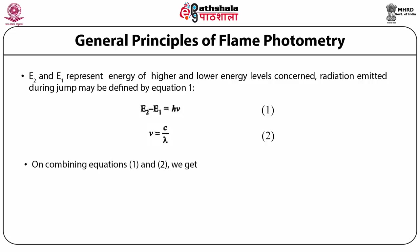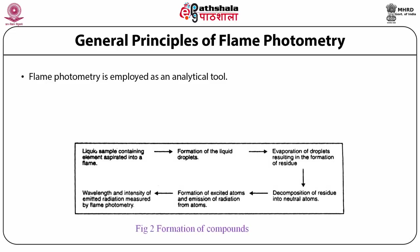Combining the two equations results in E2 minus E1 equals hc divided by lambda, and therefore lambda equals hc divided by (E2 minus E1). From this equation, one can calculate the wavelength of emitted radiation, which is characteristic of the atoms of the particular element. When flame photometry is employed as an analytical tool, the wavelength of radiation from a flame tells us about the elements present, and the intensity of radiation enables us to know the amounts of those elements present.